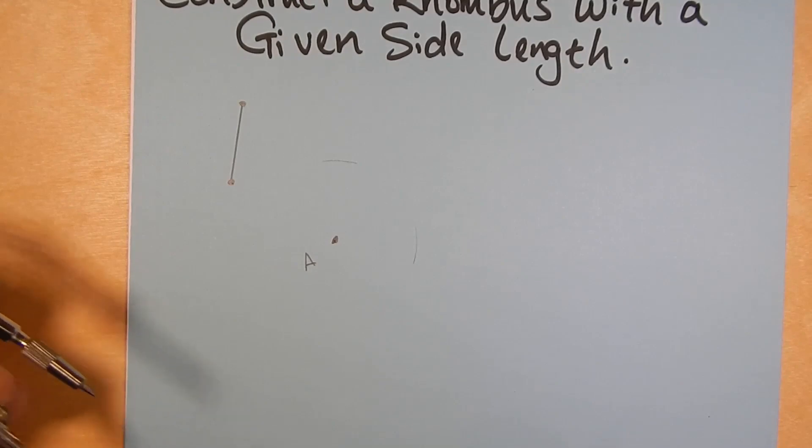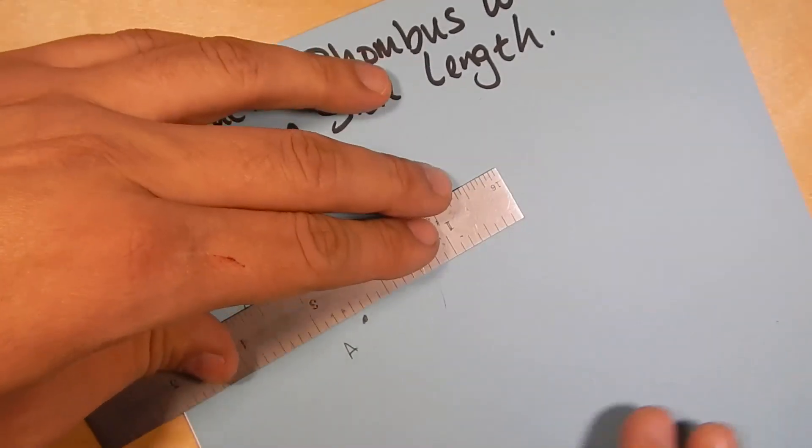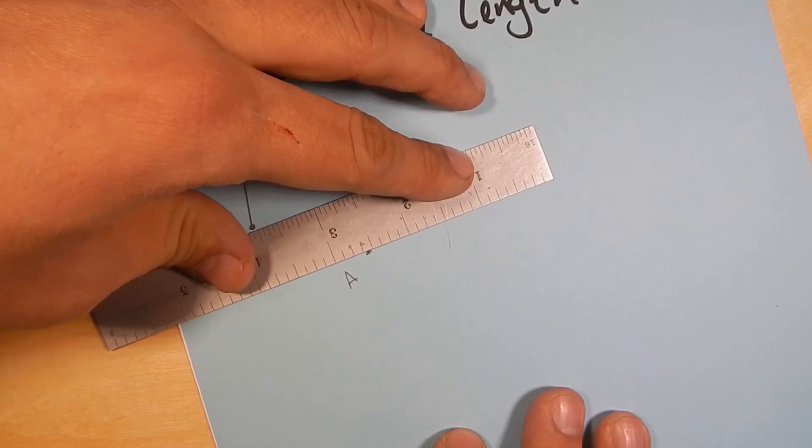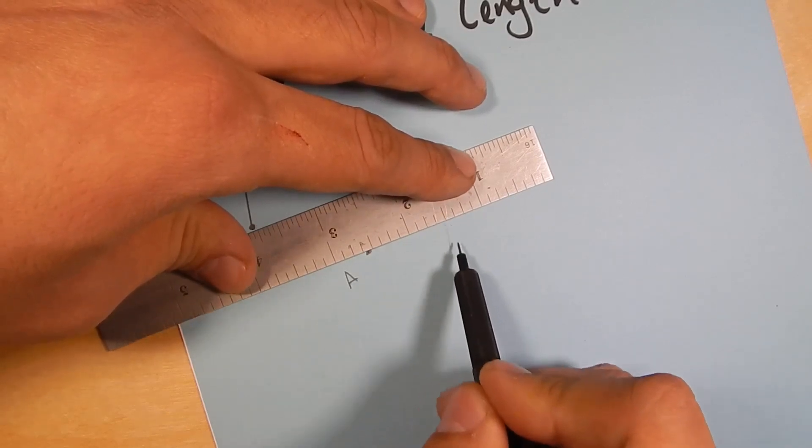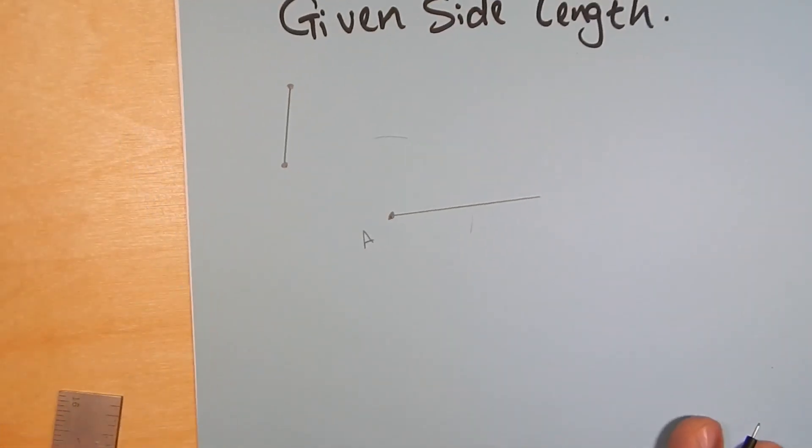So you use your measurement. I'm going to make a line segment here through this arc. Now it doesn't matter where it goes through. So we're just going to make a line that goes across.